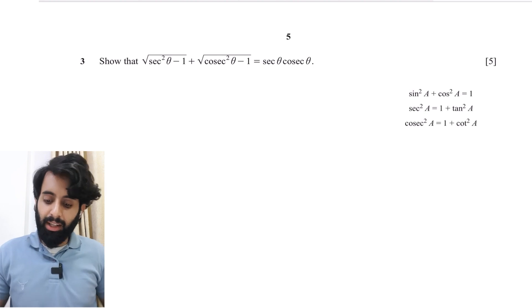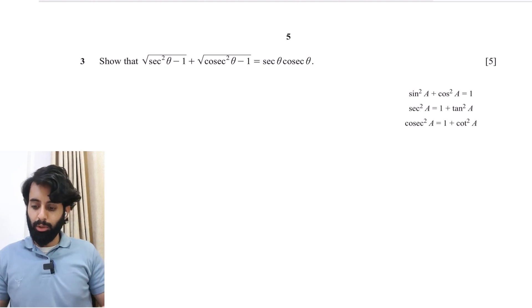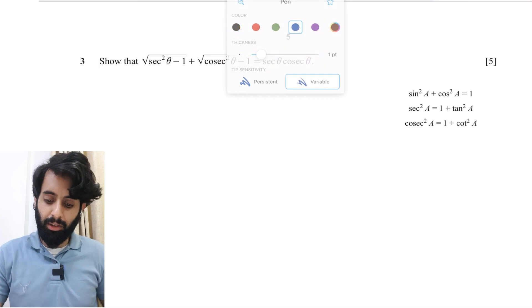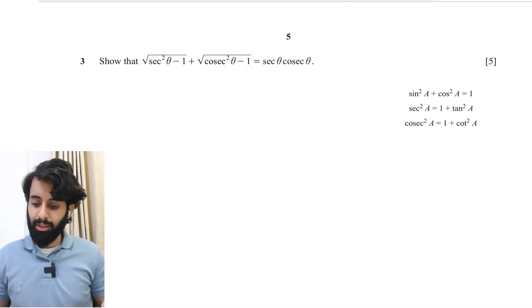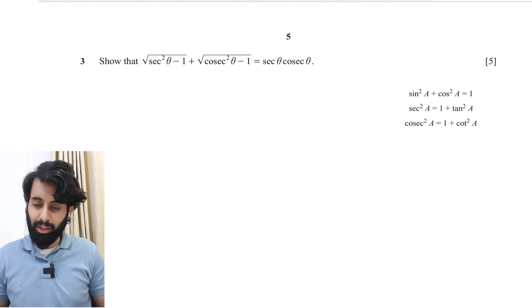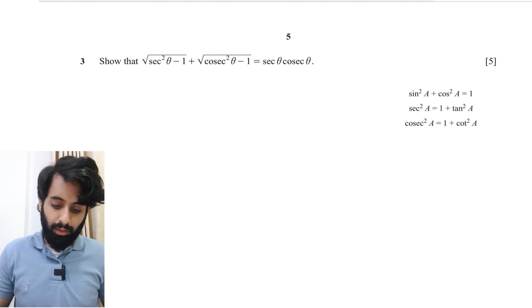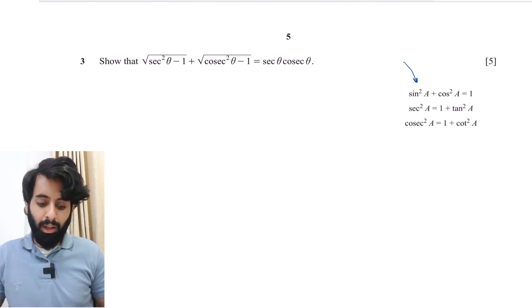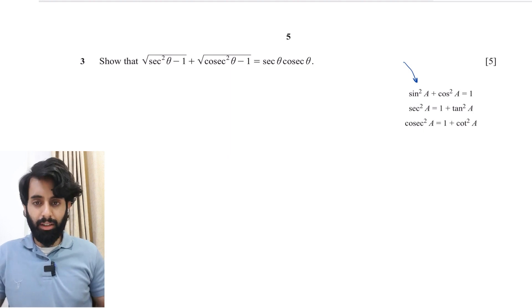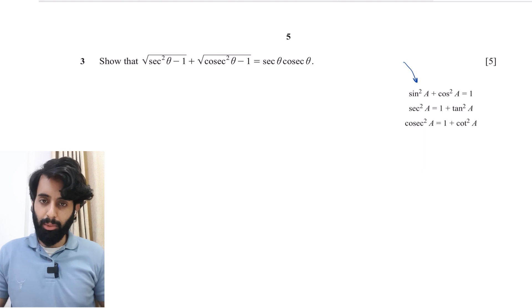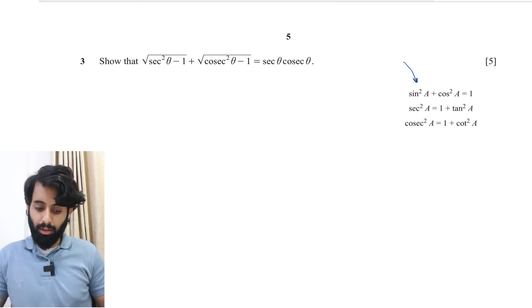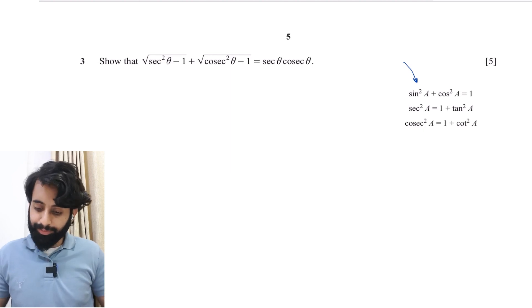Because it's five marks, you have to show every single step and not leave anything out — don't give the examiner the impression that something is obvious and skip the working. You need to show every step explicitly. Also note that the three identities I've written here are given to you at the front of the question paper, so you don't necessarily have to memorize them.